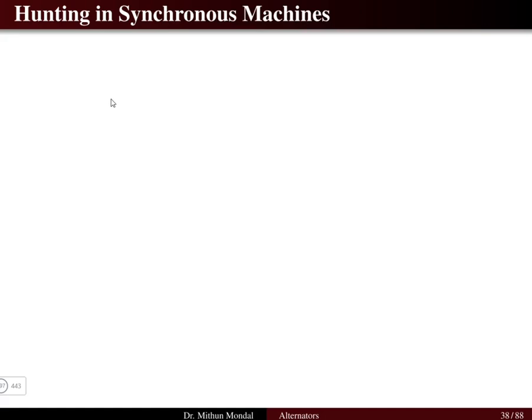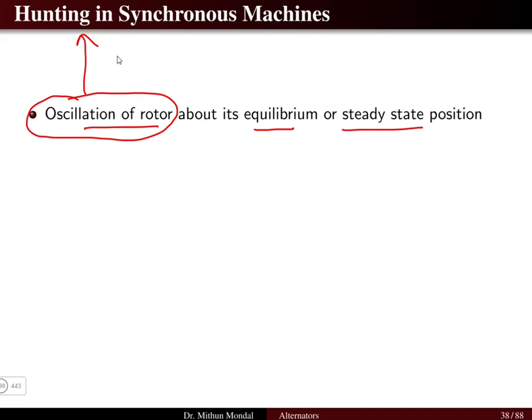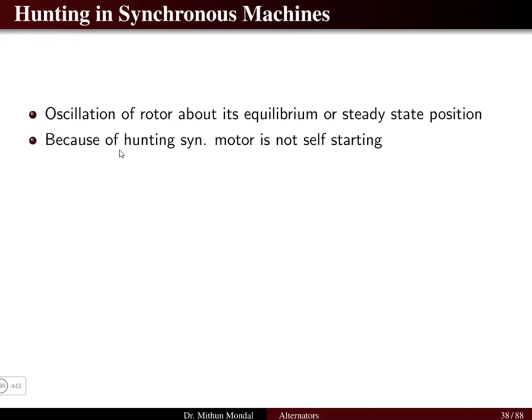Welcome to the next lecture in electrical machines. We were discussing synchronous machines, and in this particular lecture we will focus on hunting in synchronous machines. Generally, there will be oscillation of the rotor about its equilibrium or steady state position. These oscillations of the rotor are linked with hunting. Why do the oscillations of the rotor take place, and how do we avoid hunting — that is the topic of discussion for today's lecture.